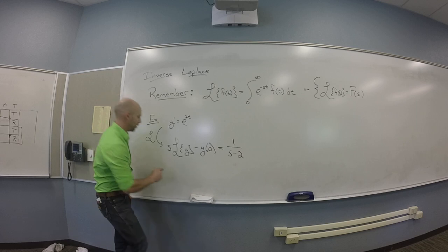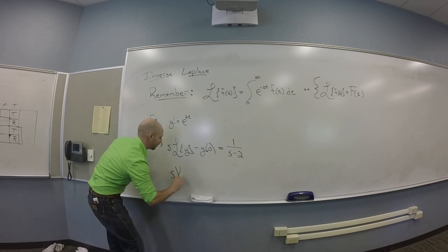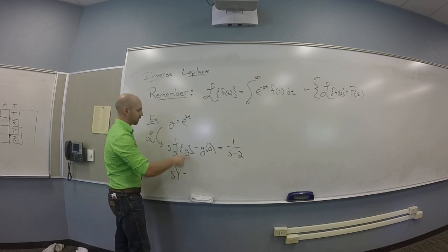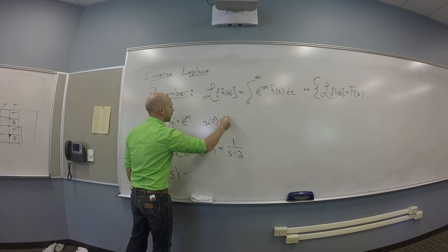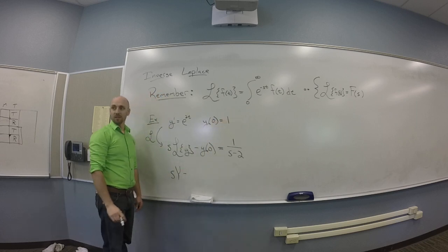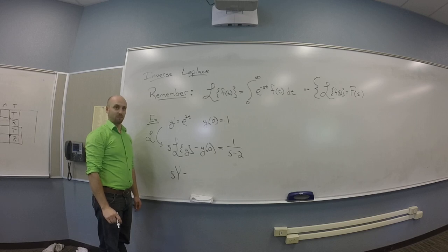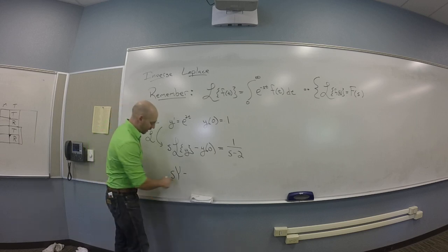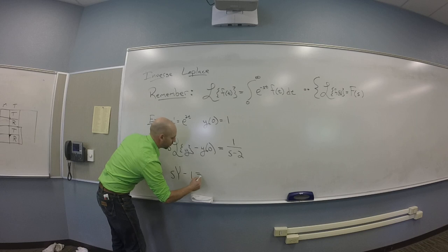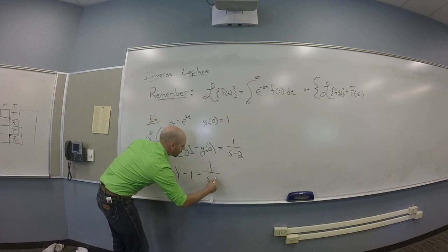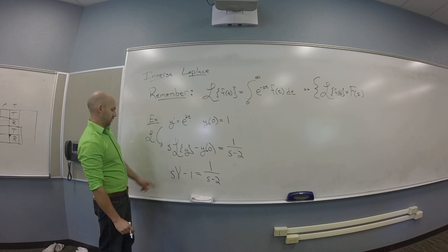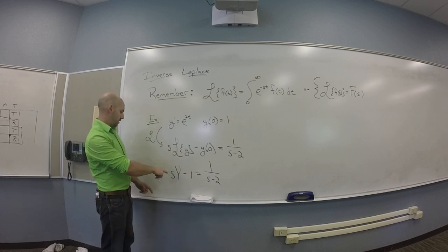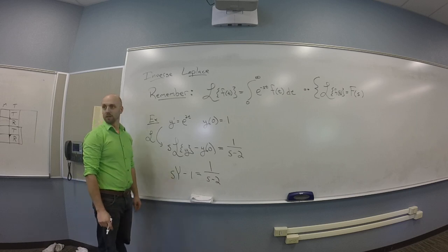So this would tell you that you have s times some function capital Y minus, let me give you a number. Let me say y of zero is 1, just for kicks. So you have s times Y minus 1 equals 1 over s minus 2. And then you might be like, I want to find out what y is. I think that's my goal.